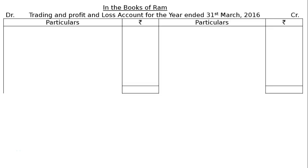The question is: the following trial balance was extracted from the books of Ram as at 31st March 2016. Prepare the trading and profit and loss account for the year ended 31st March 2016 and balance sheet as at that date, after taking into account the following adjustments. Note: there are four bad debts — one in the debit column, one in the credit column of the trial balance, and two in the adjustments.